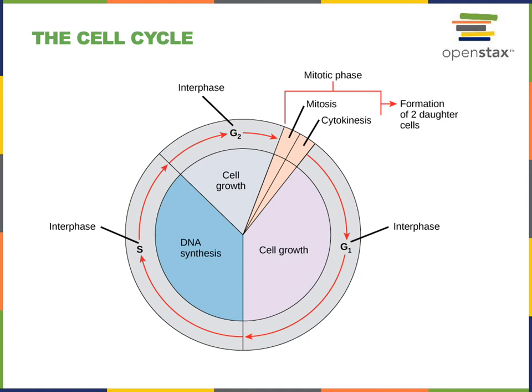In the mitotic phase, mitosis is the division of the nucleus, and each new nucleus formed during mitosis will contain a complete set of the chromosomes. Cytokinesis ends mitosis — cytokinesis is the division of the cytoplasm to form two new daughter cells, and one nucleus will be inside each of the new daughter cells formed during cytokinesis. Following cytokinesis, the two daughter cells enter into G1 phase to start a new cell cycle.